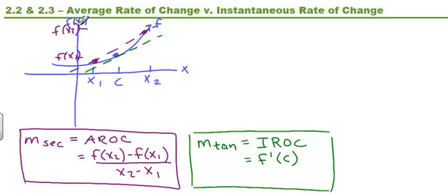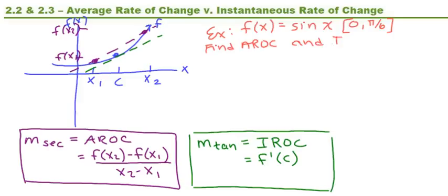Let's say that you have the example of, you have a function f of x equals sine x, and we're looking at the interval from 0 to pi over 6, closed at both ends. And we want to find the average rate of change and find the instantaneous rate of change.